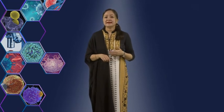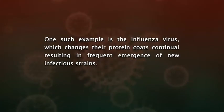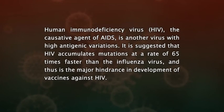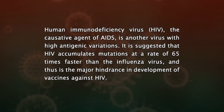A number of viruses can escape the immune attack by constantly changing their antigens. One such example is the influenza virus, which changes its protein coat continually, resulting in frequent emergence of new infectious strains. The absence of protective immunity to these newly emerging strains leads to repeated epidemics of influenza. Human immunodeficiency virus, or HIV, the causative agent of AIDS, is another virus with high antigenic variation. It is suggested that HIV accumulates mutations at a rate 65 times faster than the influenza virus, and thus is a major hindrance in the development of vaccines against HIV.